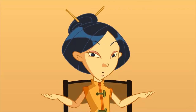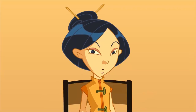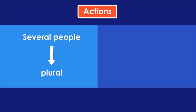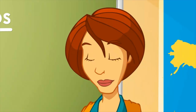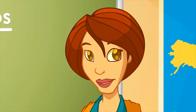What if they're performed by several people? We say that the verb is a plural action. For example, 'we've lent our markers.' It's also important to know who has or have carried out the action.